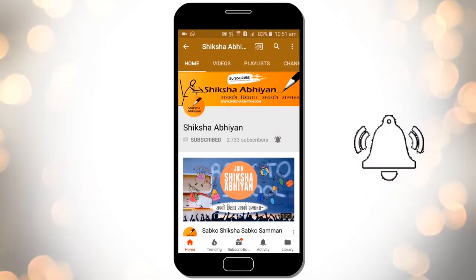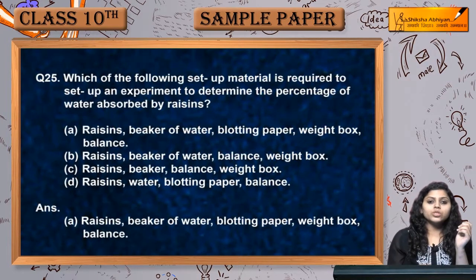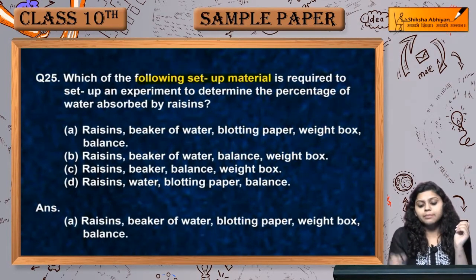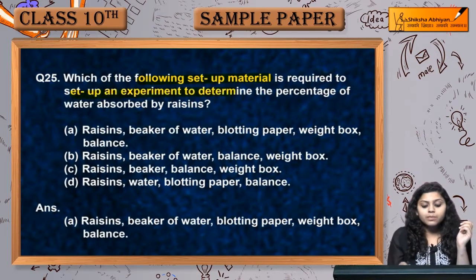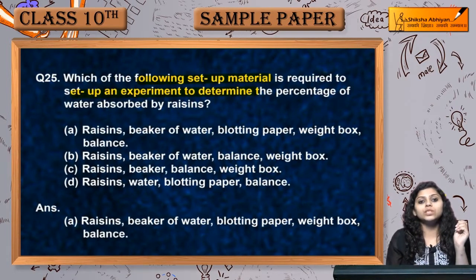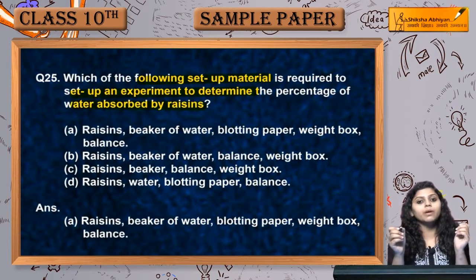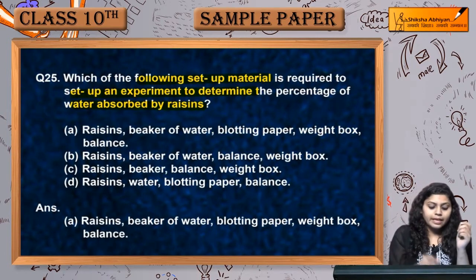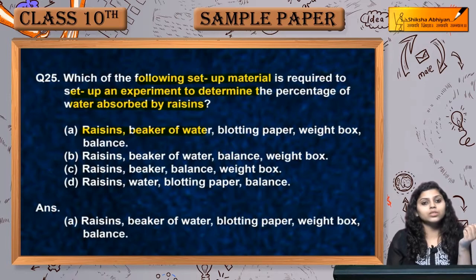Coming to question number 25. Question mein poocha hai: which of the following setup material is required to set up an experiment to determine the percentage of water absorbed by raisins? Kya kya chahiye - raisins, yes, beaker of water, yes, blotting paper, yes, weight box, yes.